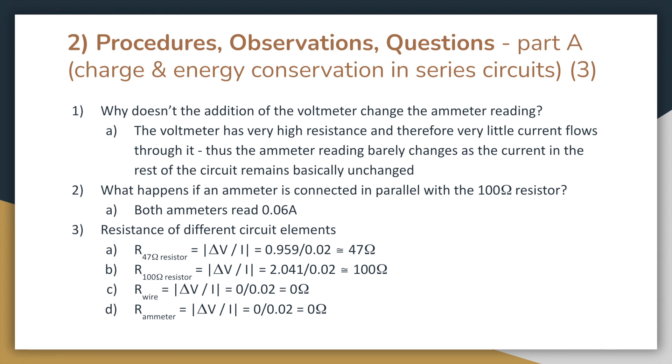And what happens if an ammeter is connected in parallel with the 100 ohm resistor? Well, then both ammeters read 0.06 amps. And lastly, we were asked to calculate the resistance of various circuit elements using Ohm's law, which states that R is equal to the magnitude of delta V over I. The values I calculated are shown at the bottom of this slide.